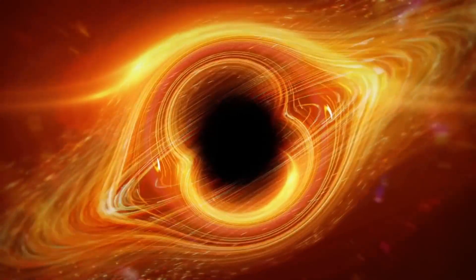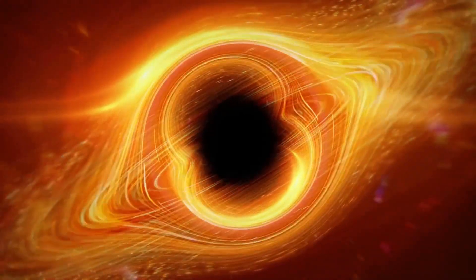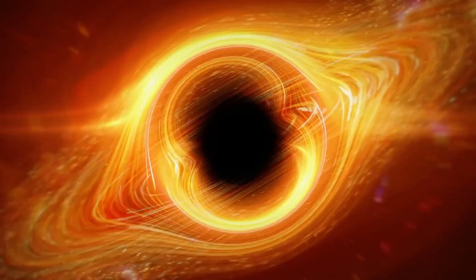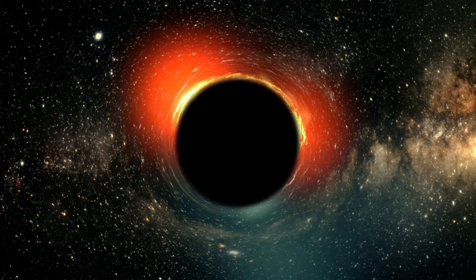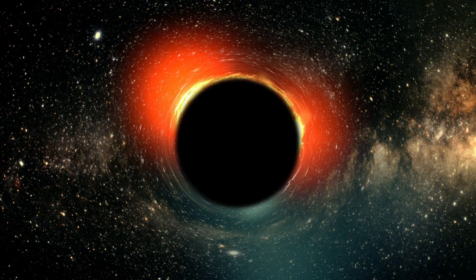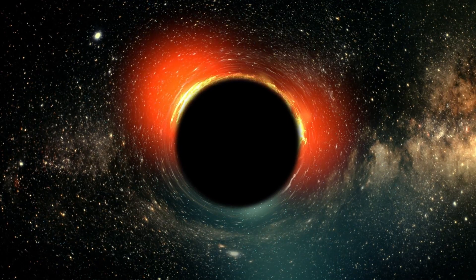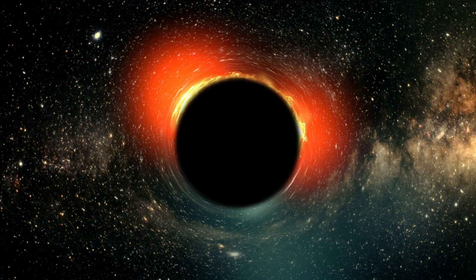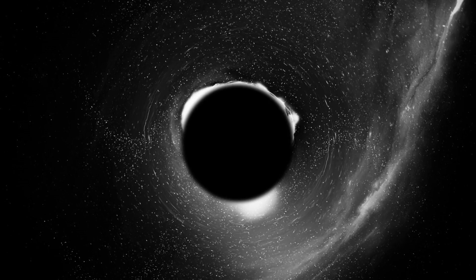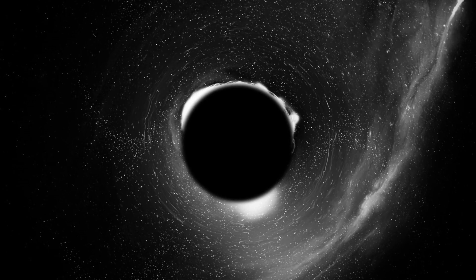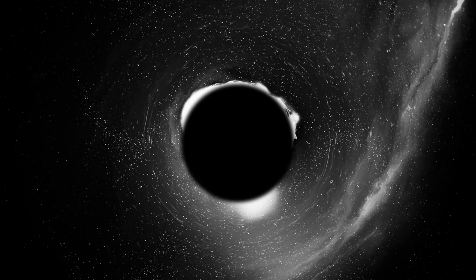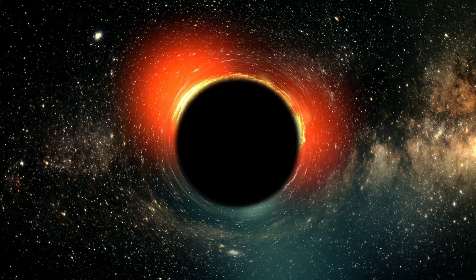Wormholes are not just science fiction. They are predicted by general relativity, though no one has observed one directly due to their instability. However, an Einstein-Rosen bridge would suggest that black holes might be pathways to other regions of space-time. The feasibility of using a wormhole for space or time travel is questionable, as even if we could stabilize one, traveling faster than light is unlikely due to Einstein's theory of special relativity. The concept of wormholes as pathways to distant parts of the universe or different times is fascinating and speculative.